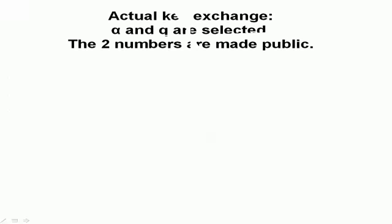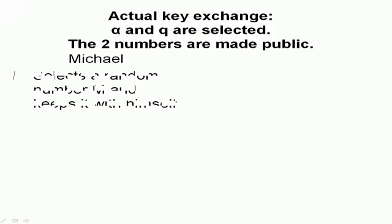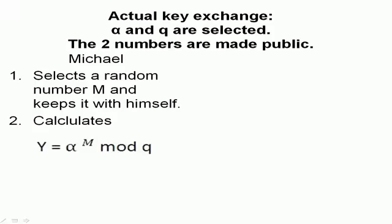Now, we'll go on to the actual key exchange, the actual algorithm that is involved in Diffie-Hellman key exchange. Alpha and Q are selected and made public. Michael selects a random number M and keeps it with himself. This is Michael's private key. He calculates a number Y using alpha and Q and M. The formula used is shown.